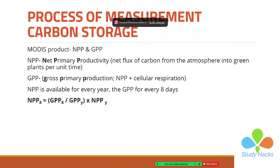NPP provides the net flux of carbon from the atmosphere into green plants per unit time. Since NPP is available yearly and GPP is available every eight days, but we need carbon storage data every eight days, we implement this equation in our code to get eight-day interval data for carbon storage.